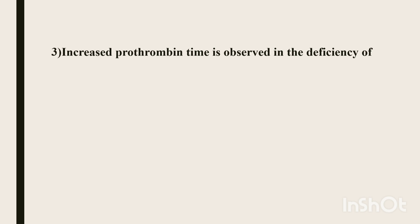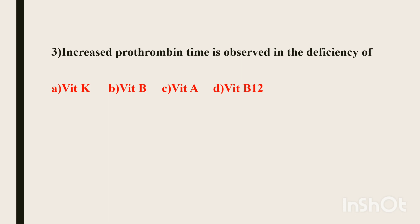Third question. Increased prothrombin time is observed in the deficiency of which vitamin? Prothrombin time is increased, meaning clotting time is very late. The vitamin associated with clotting is vitamin K. Vitamin K supports clotting factors, so its deficiency results in delayed clotting.